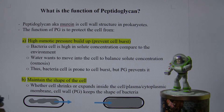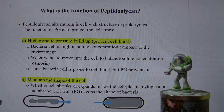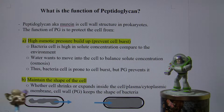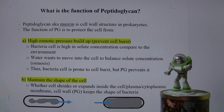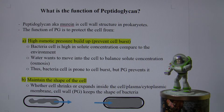Gram-positive does not contain any outer membrane or periplasmic space. Whereas in gram-negative, they would contain an outer membrane, periplasmic space, and a monolayer of peptidoglycan.